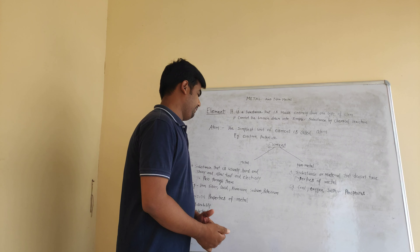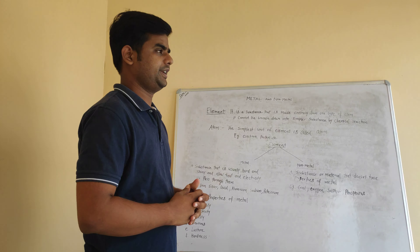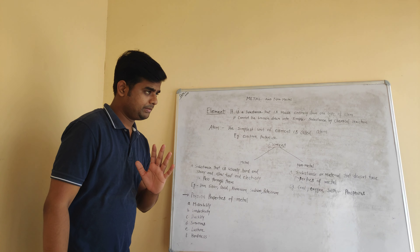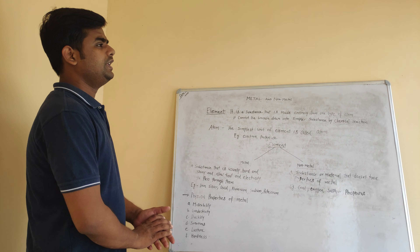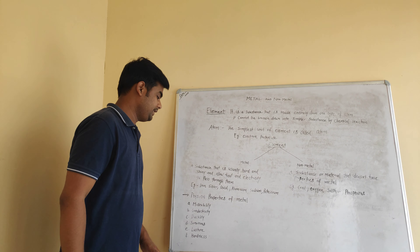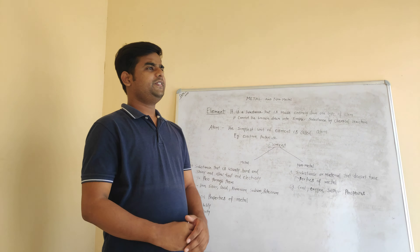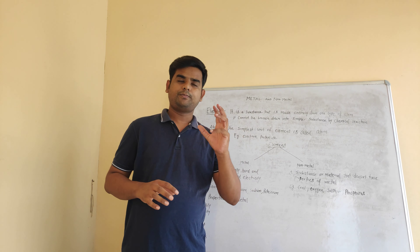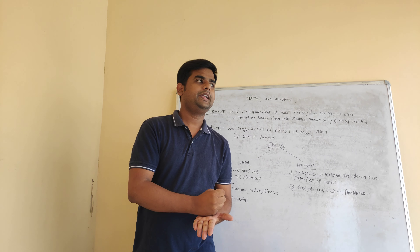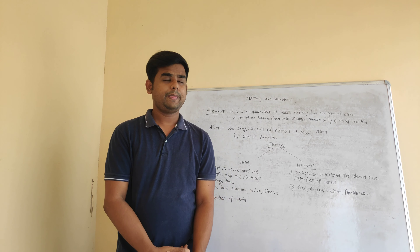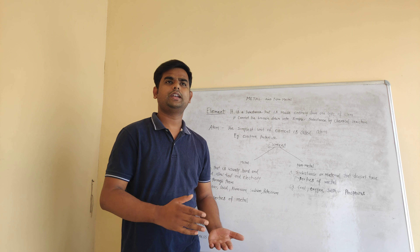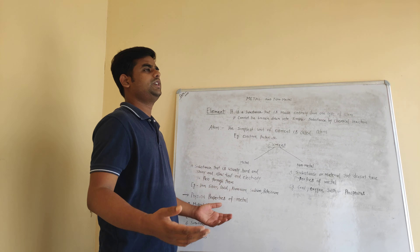So what do we know about the physical properties of metals? The first property is malleability. Malleability is a property of metals in which, if we beat metal, it can be converted into a thin sheet.